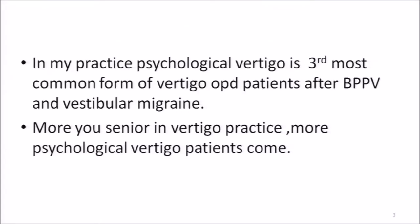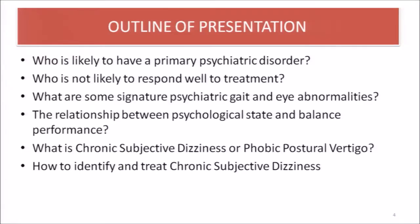In my practice, psychological vertigo is the third most common form of vertigo in OPD patients, after BPPV and migraine. The more senior you are in vertigo practice, the more psychological patients come to you. The outline of my presentation covers: who is likely to have a primary psychiatric disorder, who is not likely to respond well to treatment, some signature psychiatric gait and eye abnormalities, the relationship between psychological state and balance performance, and what is chronic subjective dizziness or postural phobic vertigo and how to identify and treat it.